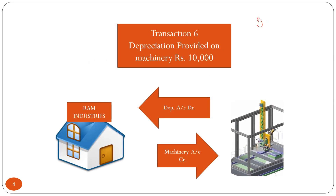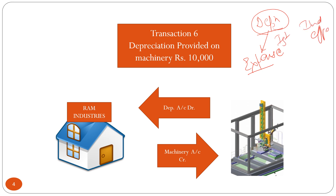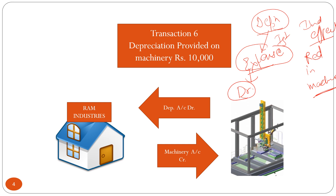When depreciation is charged on the machinery, there are two effects. First, since it is an expense, it will be debited. Second, there will be a reduction in the value of machinery, and that effect will be credited. So the journal entry will be: Depreciation Account debit to Machinery Account.